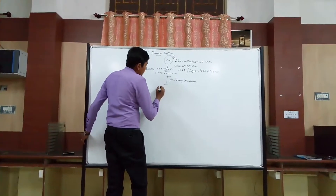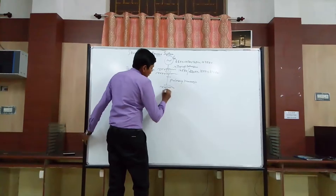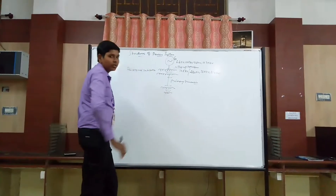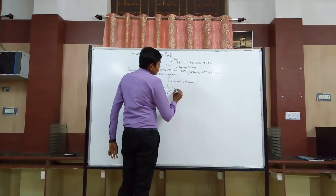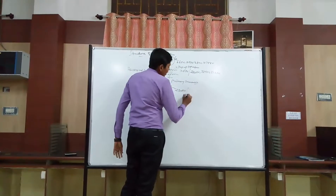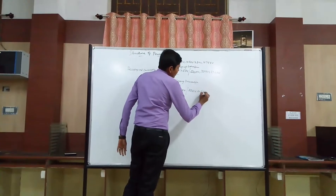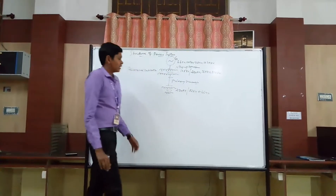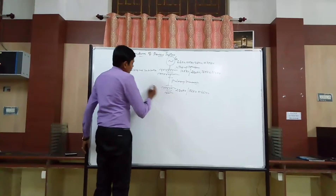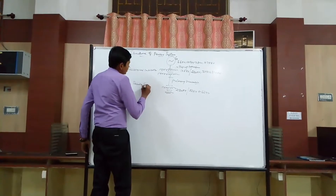Arriving at this primary transmission, we are having a step-down transformer. The range of this step-down transformer: from 220 KV, we are stepping down to 33 KV or 66 KV. This is otherwise called the receiving substation.